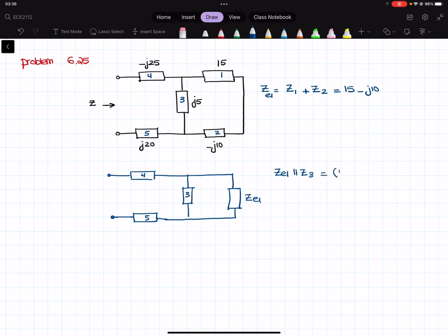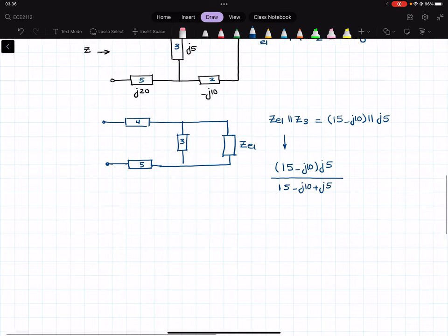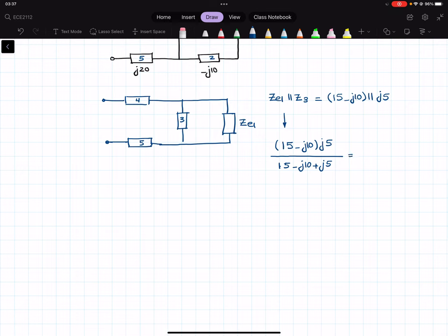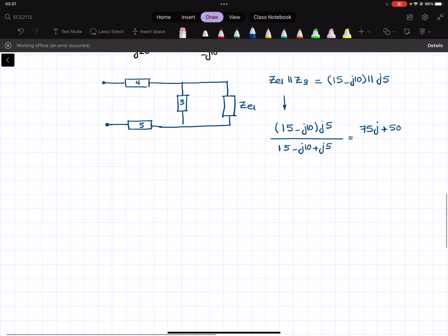ZE1 in parallel with Z3, and that means that 15 minus J10 is in parallel with J5, which is my Z3. So if I want this parallel impedance over here, it is 15 minus J10 multiplied by J5 over 15 minus J10 plus J5. So in the numerator I'm going to get 5 multiplied by 15 is 75J plus 50J multiplied by J is negative 1.